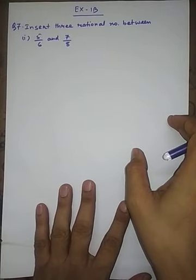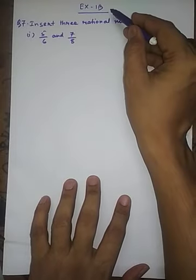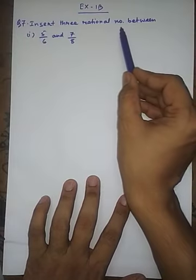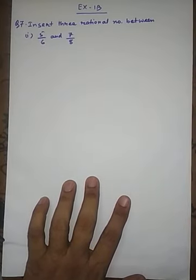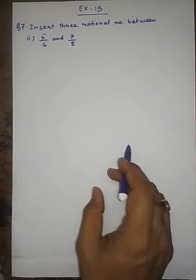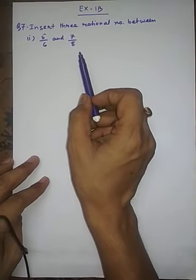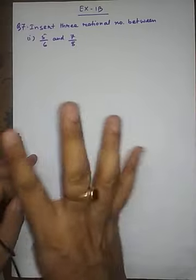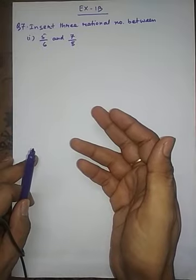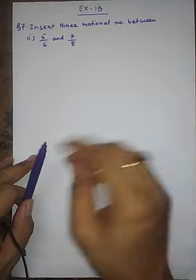In this video we will solve Exercise 1B, question number 7: Insert three rational numbers between five by six and seven by eight. This question can be solved in four ways, but I will tell you only two ways which I think are easy. If you want any other technique, you can text me on WhatsApp and I will explain those techniques also.